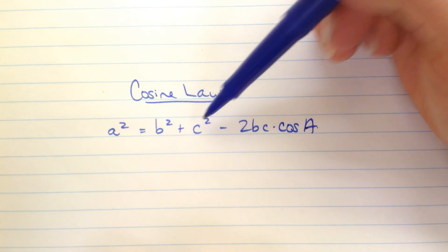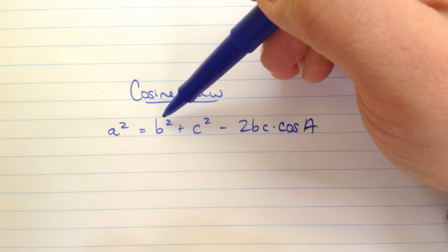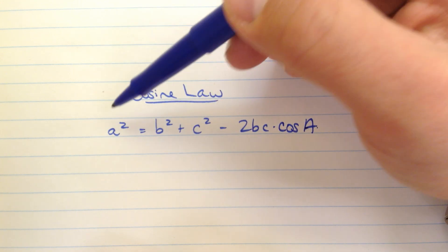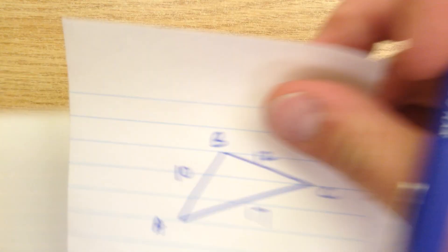So for example if you knew all three sides you could find the remaining angle, or if you knew the angle A and you knew B and C you could find little a. Okay, so let's look at some examples of the different kinds.